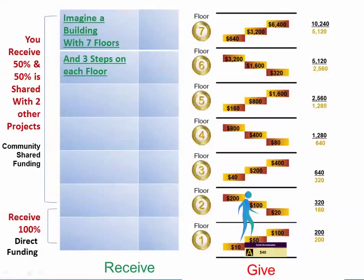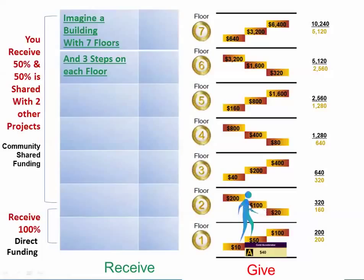Here's the pictorial roadmap of exactly how our donation distribution formula works. Imagine you're building a building with seven floors and each floor has three steps on it. The target donation on the first step of the first floor is $10, then $50, then $100. On the second floor, the first step is a $20 target donation, then $100, then $200. It keeps going up — three steps on each floor with target donations. Each floor doubles in value as it goes up. The second floor adds up to $320, the next floor $640, then $1,280, and so forth, all the way up to a little over $10,000.